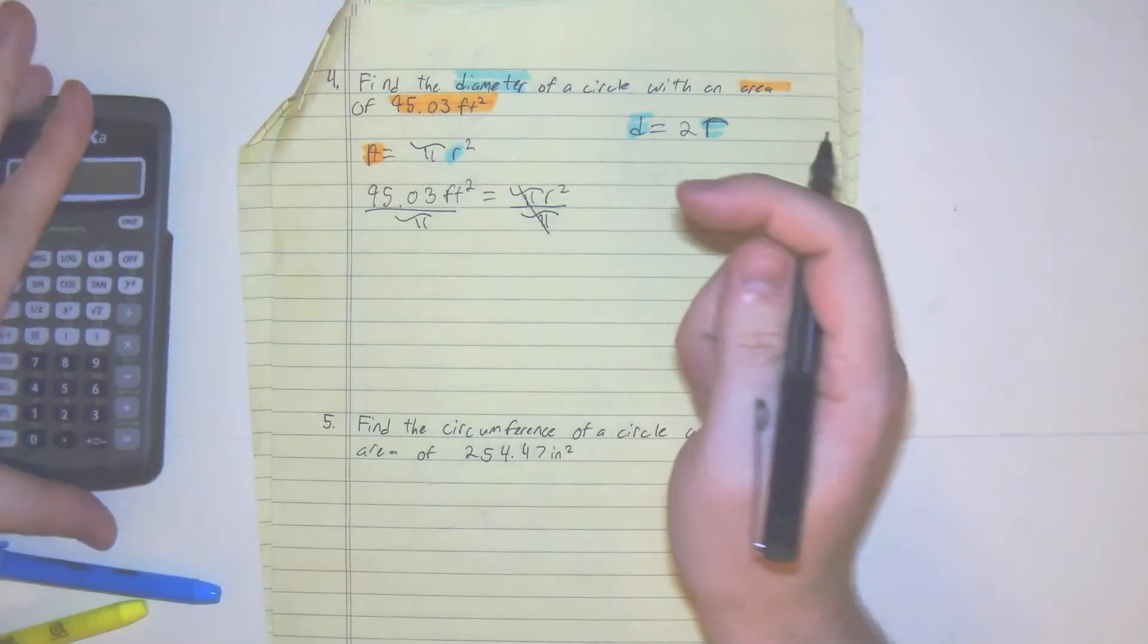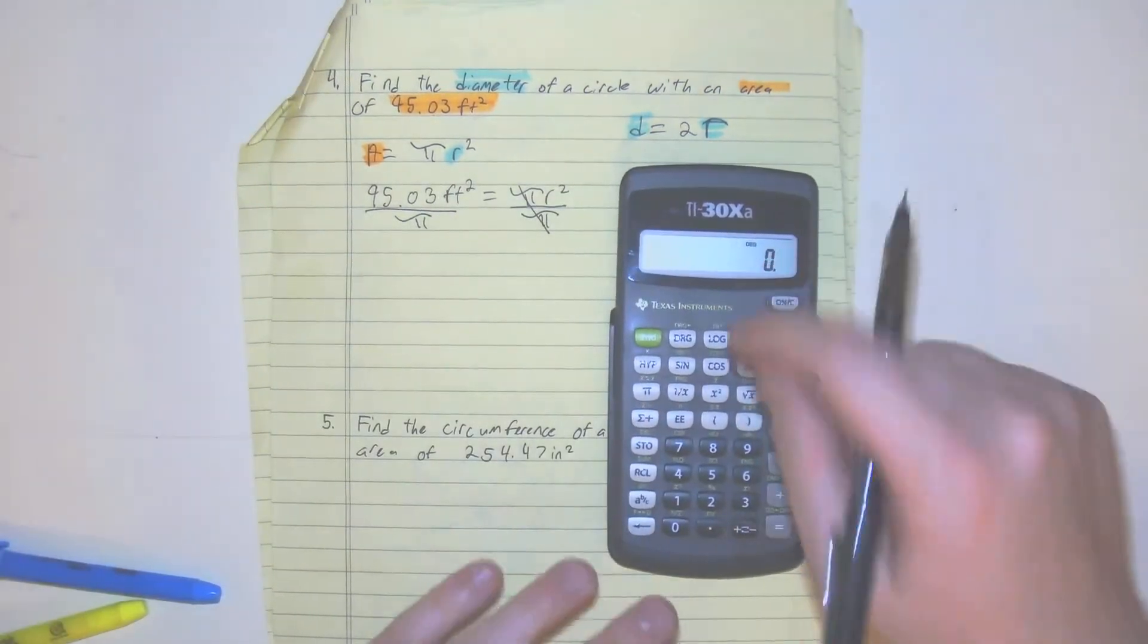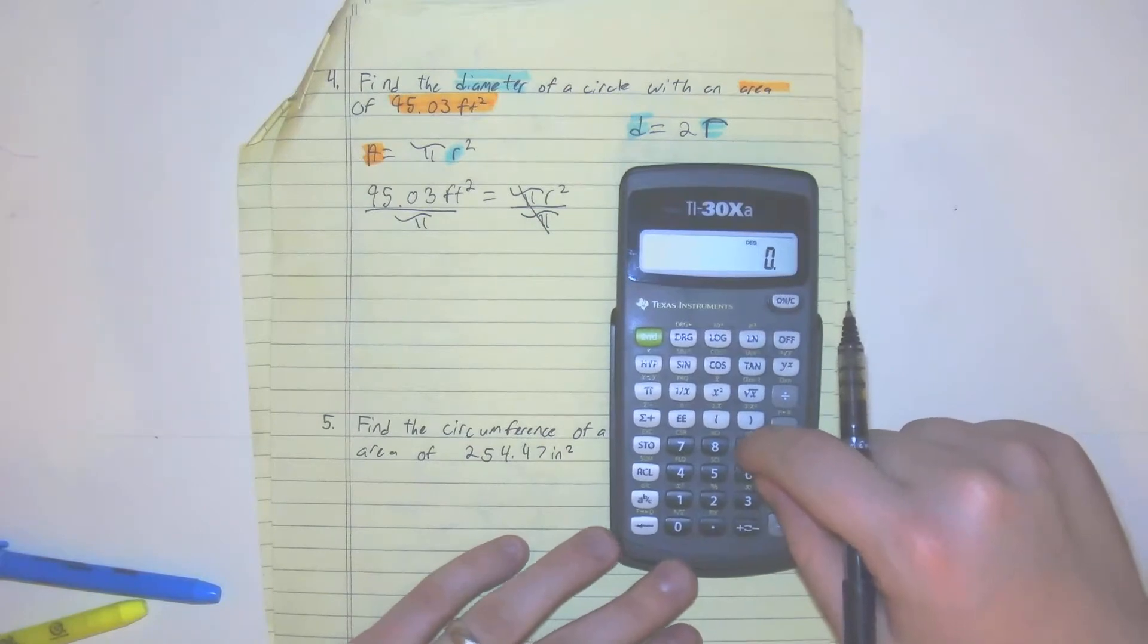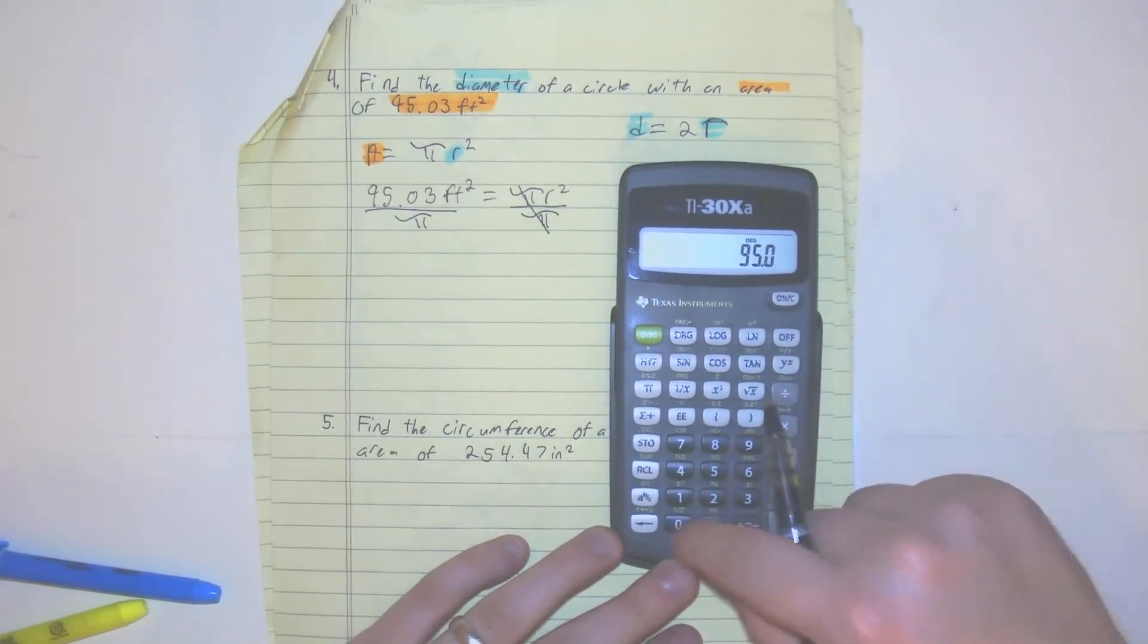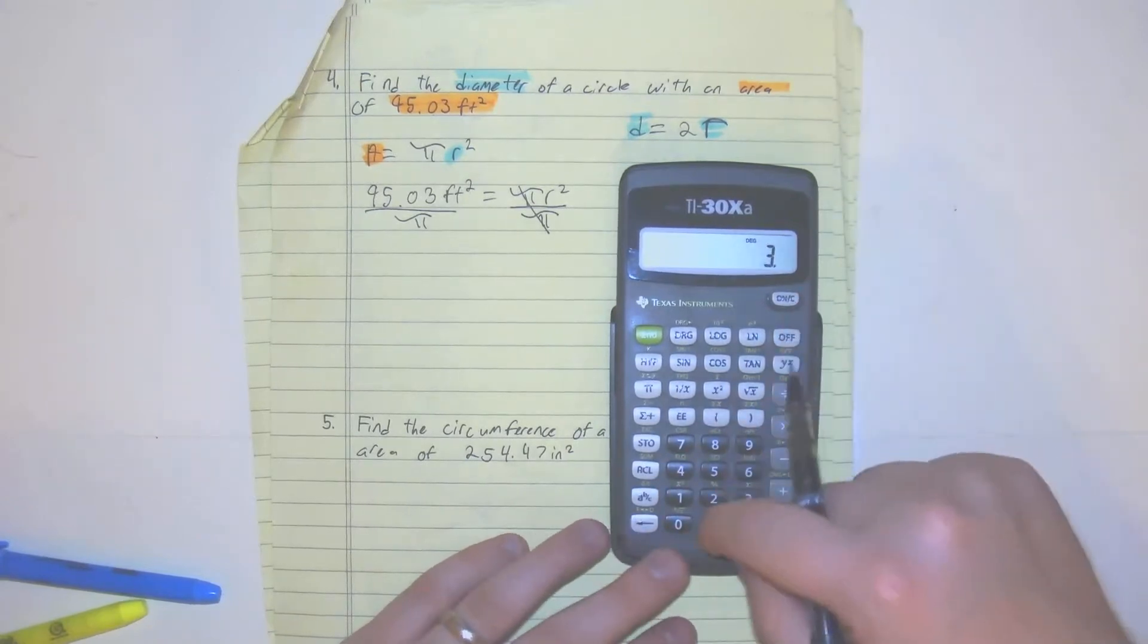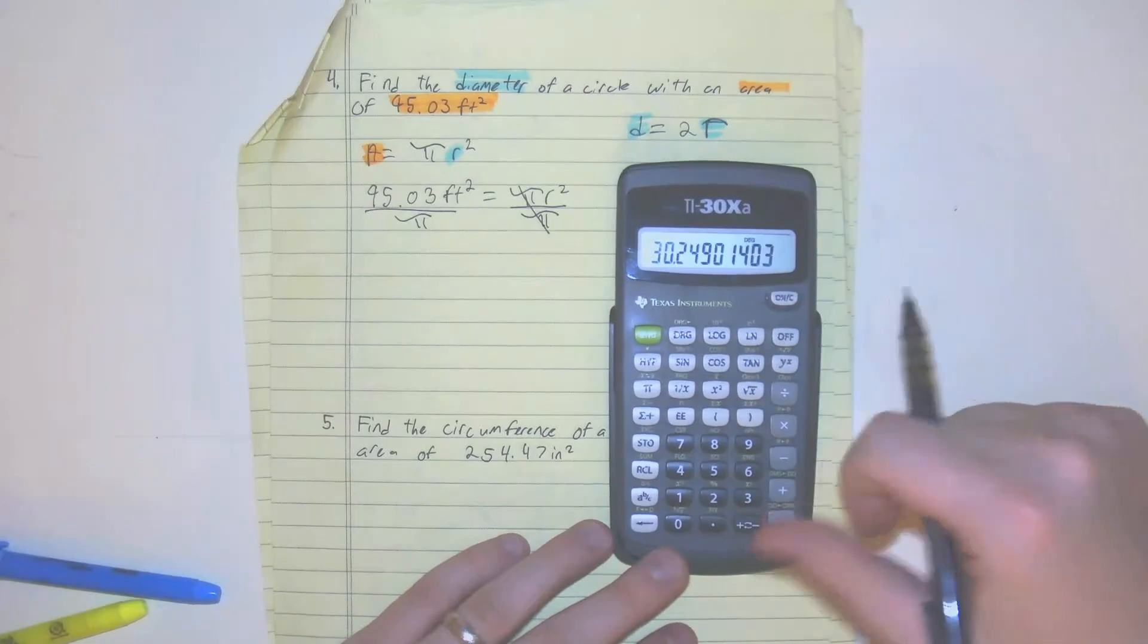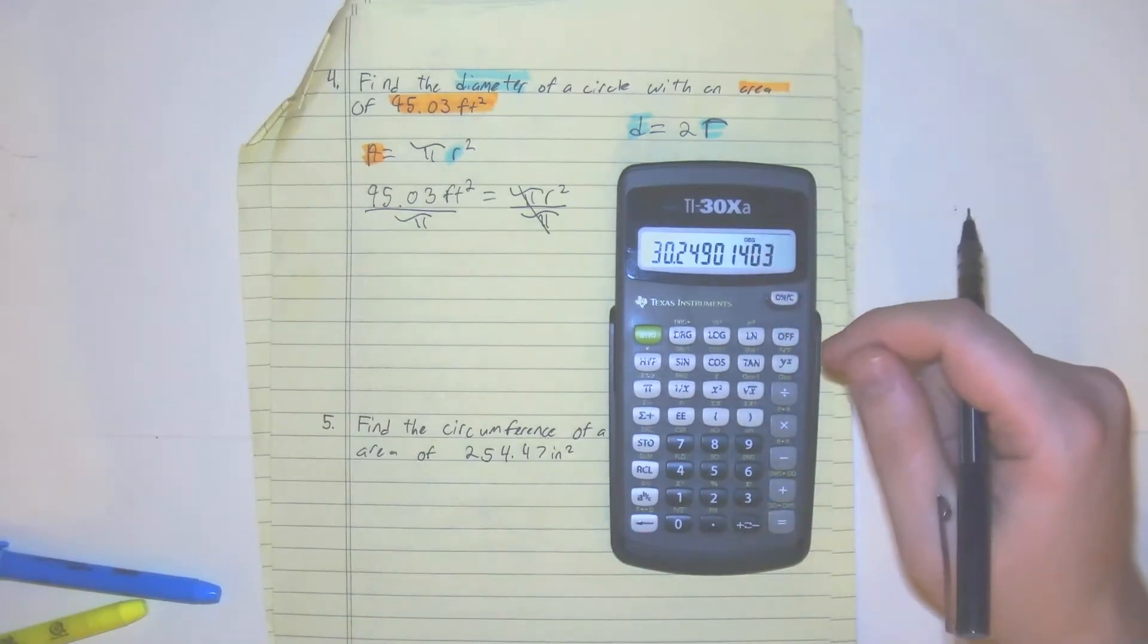Just in our calculator, you could do it this way or you could do it all at once. I'm just going to get it right away. So we have 95.03 divided by 3.14159 equals. And that's the next number we have.